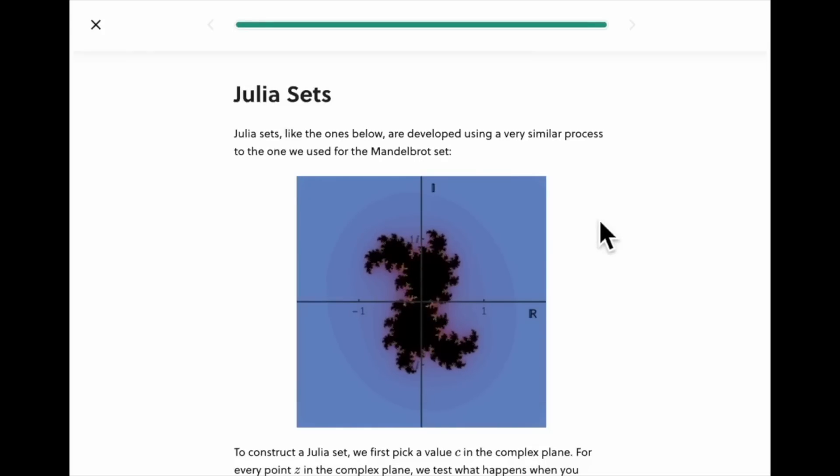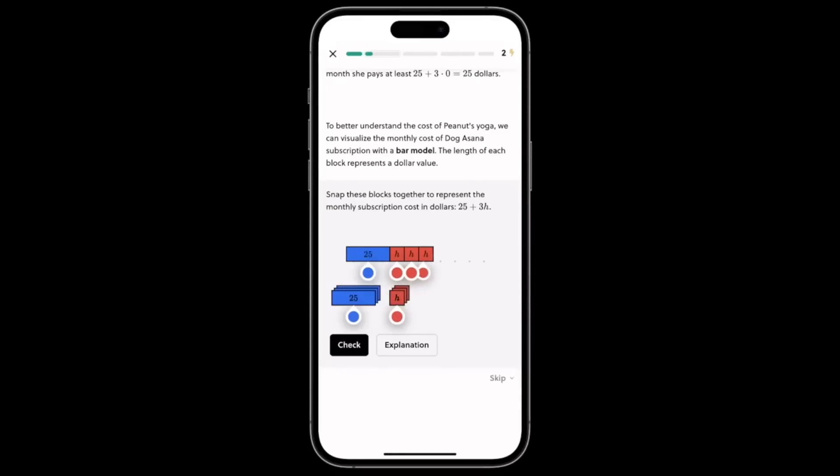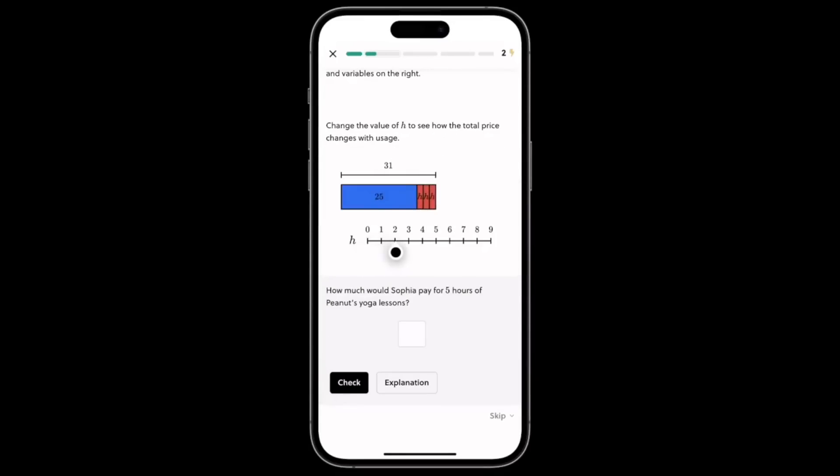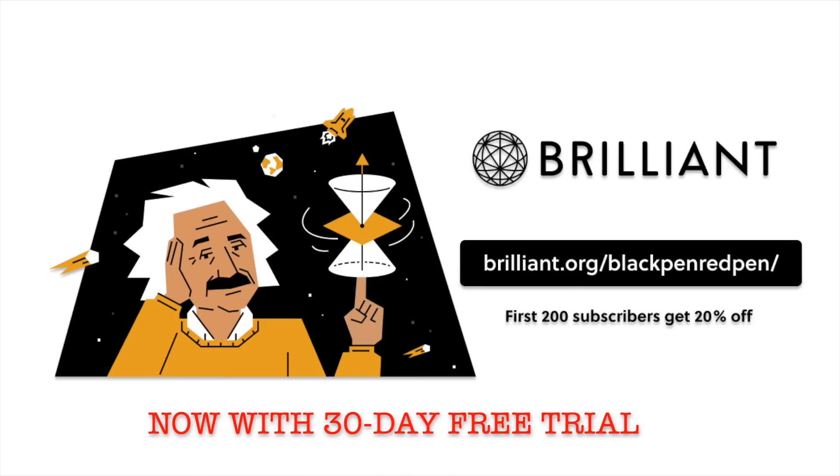In fact, I have never heard of Julia sets but they look really cool. I have been a math teacher for over a decade now, and I strongly believe that Brilliant can help you reach your goals in getting better in math. So let's get started today. Use the link in the description, brilliant.org/blackpenredpen, so that you can get 20 percent discount. Right now they also offer a 30-day free trial, so definitely go check them out and start learning today. I want to thank Brilliant for sponsoring this video. I also want to thank you guys for checking them out.